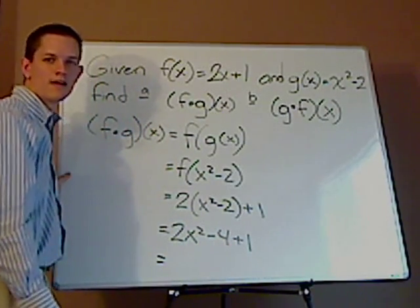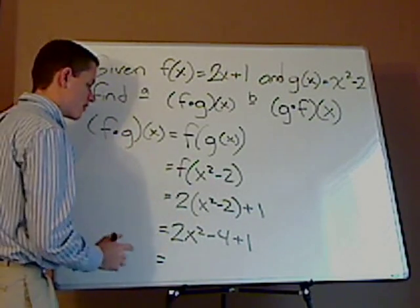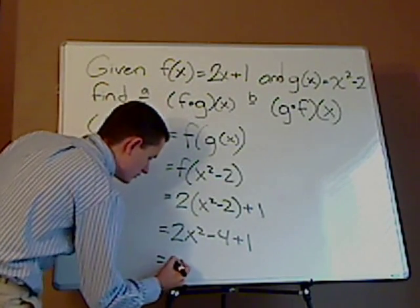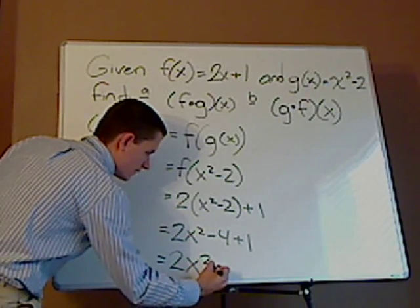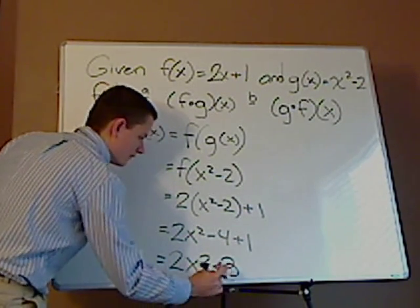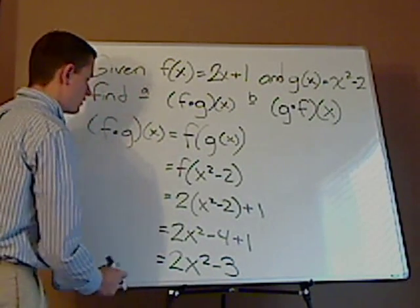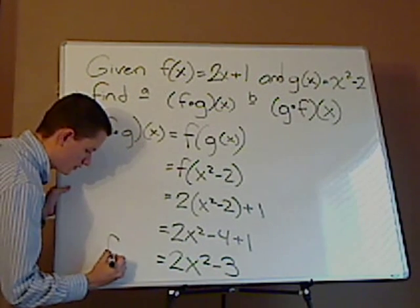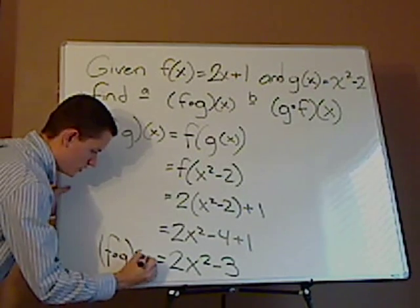So you distribute the 2. That would be 2x squared minus 4 plus 1. Can I simplify it further? Yes, because there's like terms. What's negative 4 plus 1? It's negative 3. So you have 2x squared minus 3. That would be my f of g of x.